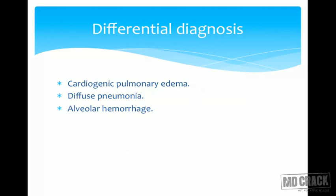Coming to differential diagnosis, the commonest is cardiogenic pulmonary edema, followed by alveolar hemorrhage and diffuse interstitial pneumonitis.